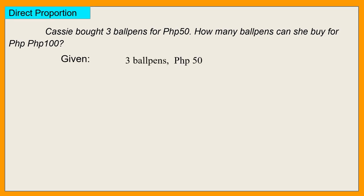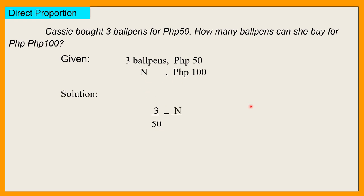Given: we have three ballpens, 50 pesos. So N ballpen, 100 pesos — kasi hindi pa natin alam kung ilang ballpens. Solution: since this is a direct proportion, 3 over 50 is equal to N over 100. Cross multiply: 50 times N is equal to 3 times 100.